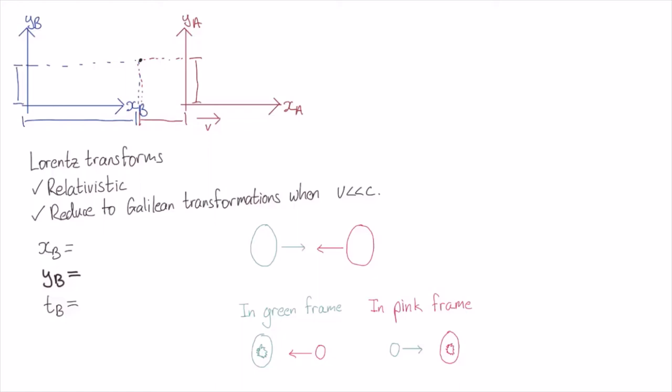Because of this, there can be no length contraction in the directions orthogonal to the motion, and similarly, no length expansion. This tells us that the height Alice measures along her y-axis is the same as the height Bob measures along his. In other words, yB = yA.